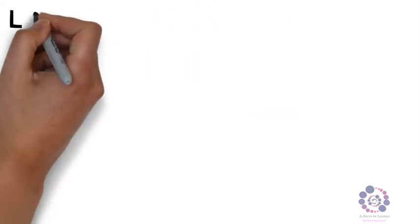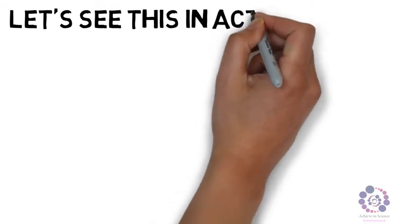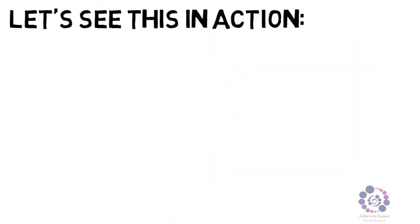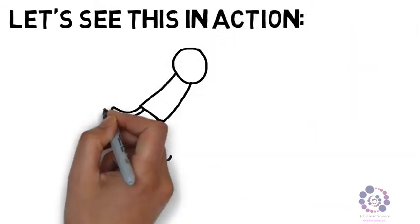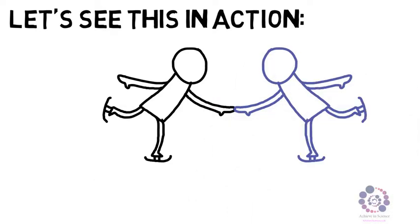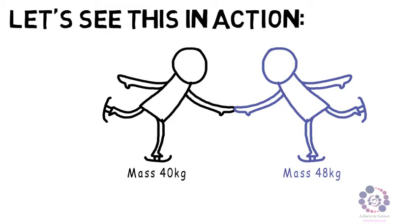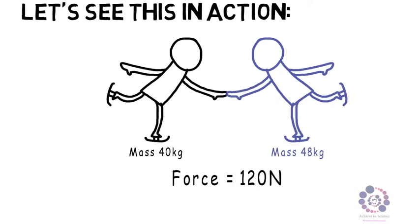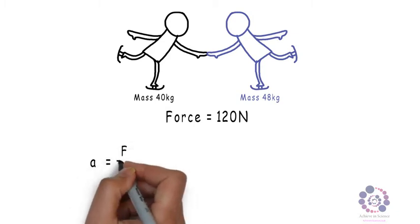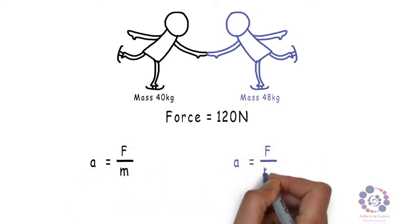Now let's see this in action. Here we have two skaters. Skater 1 has a mass of 40 kg, and skater B has a greater mass. They have a mass of 48 kg. In this scenario, we are going to apply a force of 120 Newtons. So let's now see what happens. If we use the equation A equals F divided by M for both, we can work out the acceleration of both.